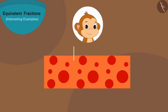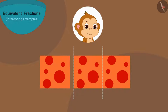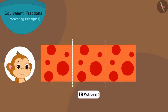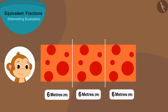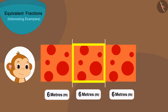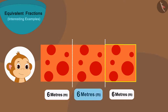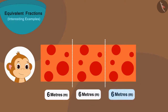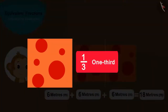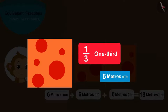Absolutely right! Babban will cut his cloth into three equal parts and take one part. If we divide 18 meters into three equal parts, each part will be six meters long. This first part is six meters. The second part is also six meters. And this third part is also six meters. Six plus six plus six equals 18 meters. So one third of Babban's cloth will be six meters long.